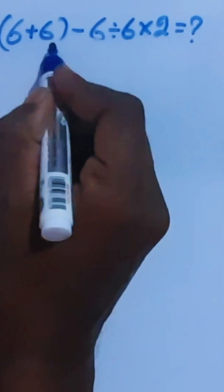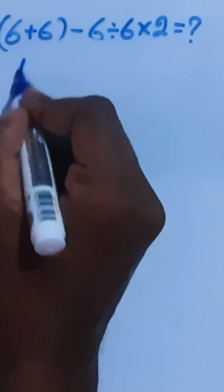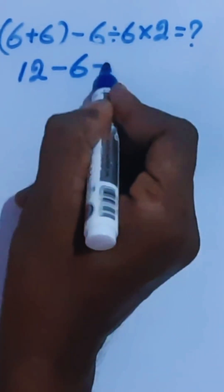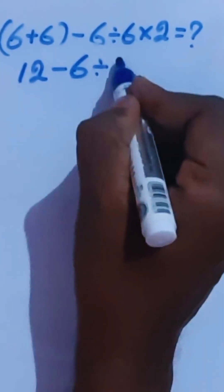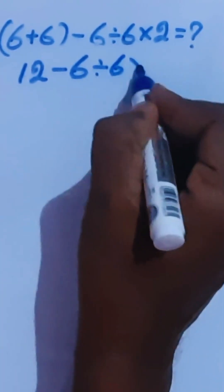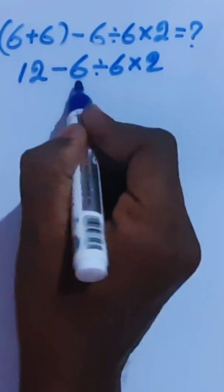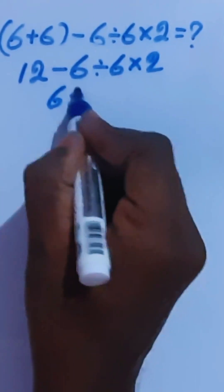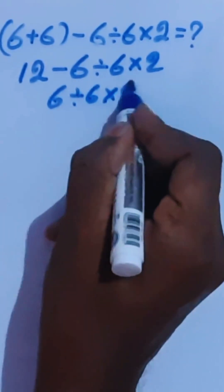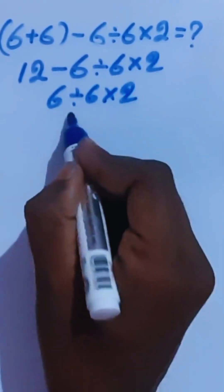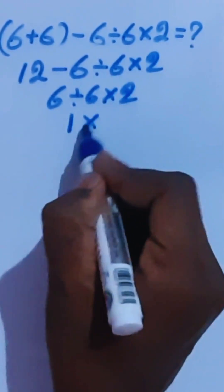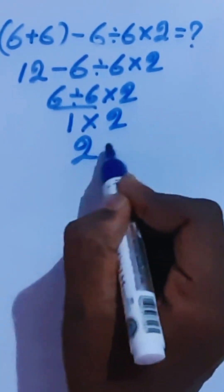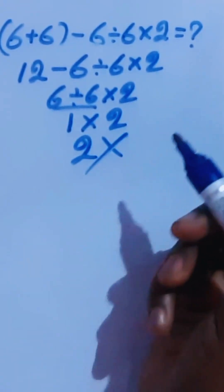Hi guys. Here, 6 plus 6 is 12 minus 6 divided by 6 times 2. This is 6 divided by 6 times 2. 1 times 2 is 2. This is the wrong answer.